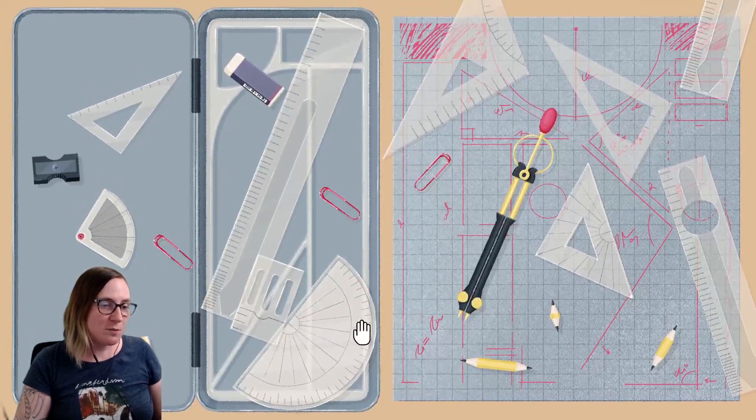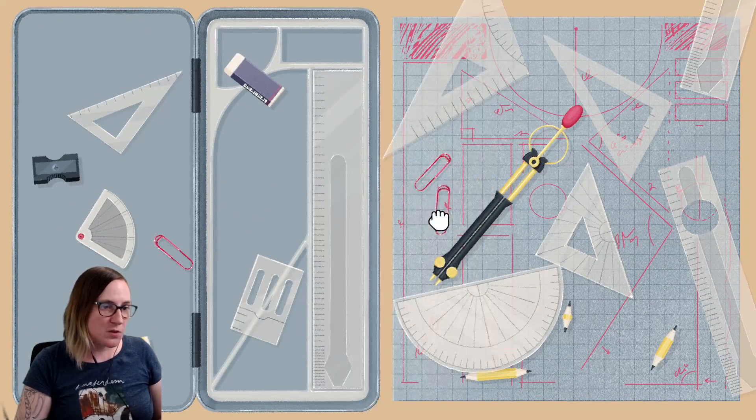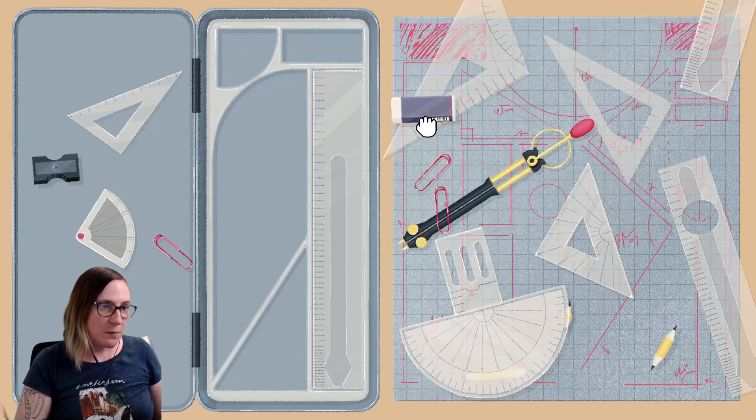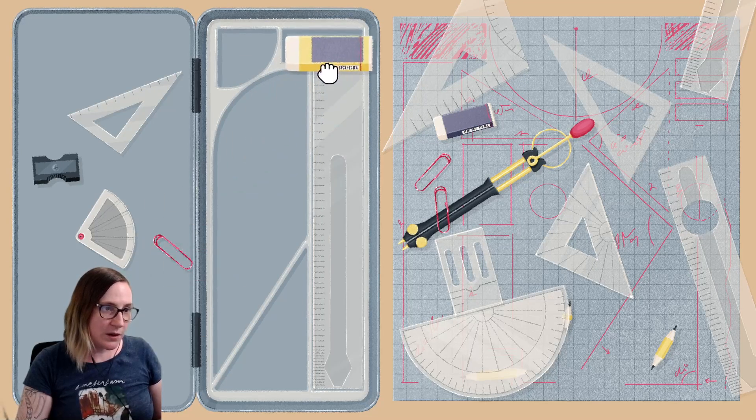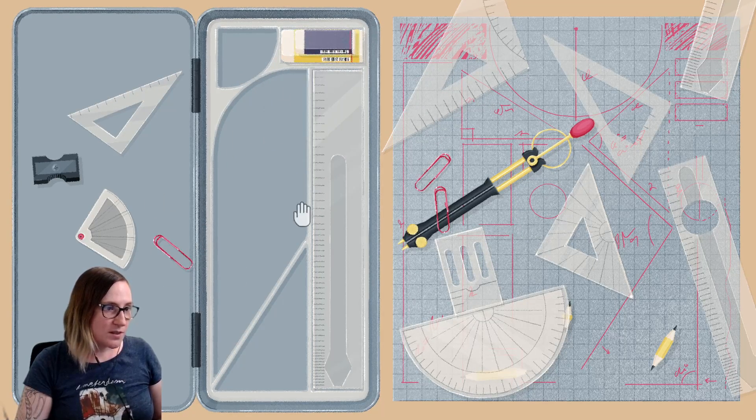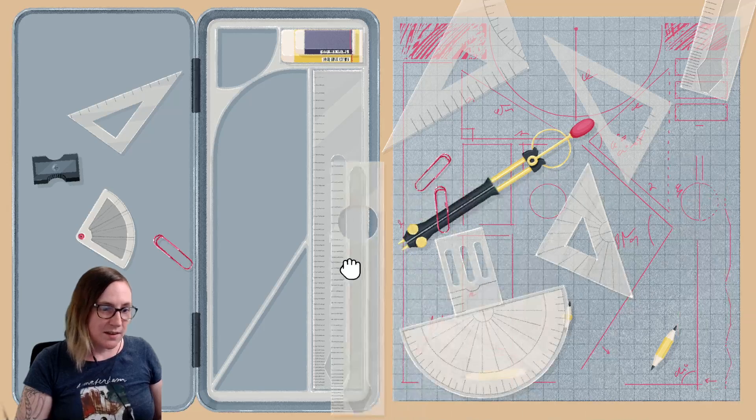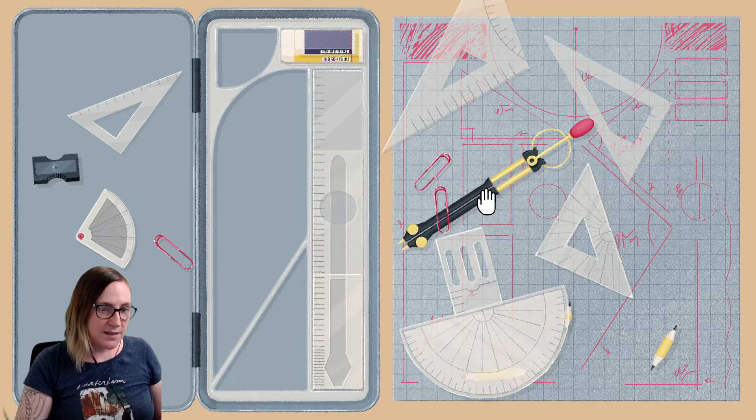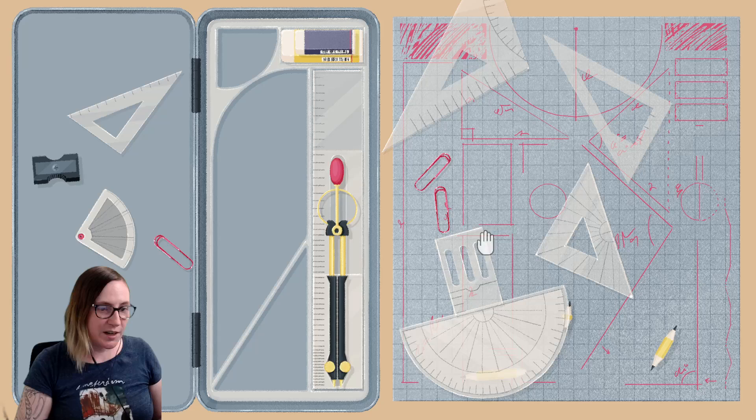The first solution I'm going to show you is probably the simplest one. It's putting everything back in the pencil box where it goes. Put erasers on top like this. These are going to level like this and this will go in there.